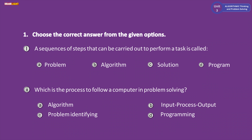The first question is: choose the correct option. Question one: a sequence of steps that can be carried out to perform a task is called — A problem, B algorithm, C solution, D program. The correct answer is option B, algorithm.